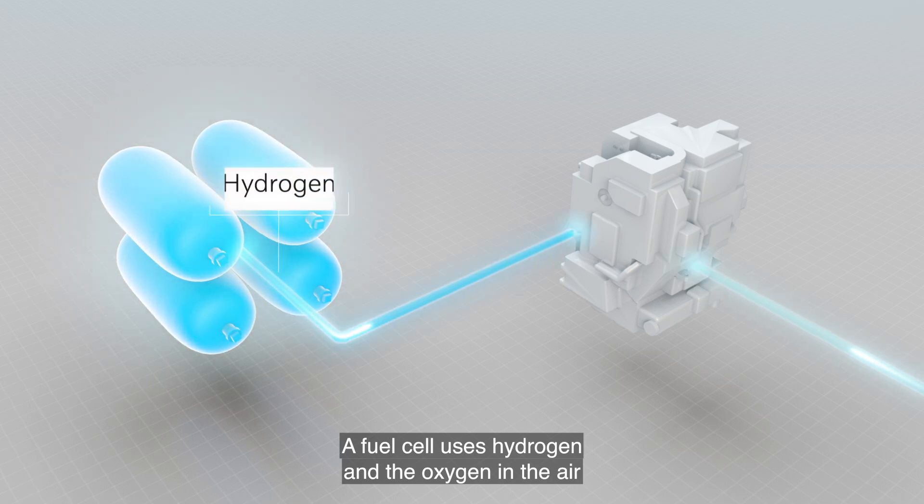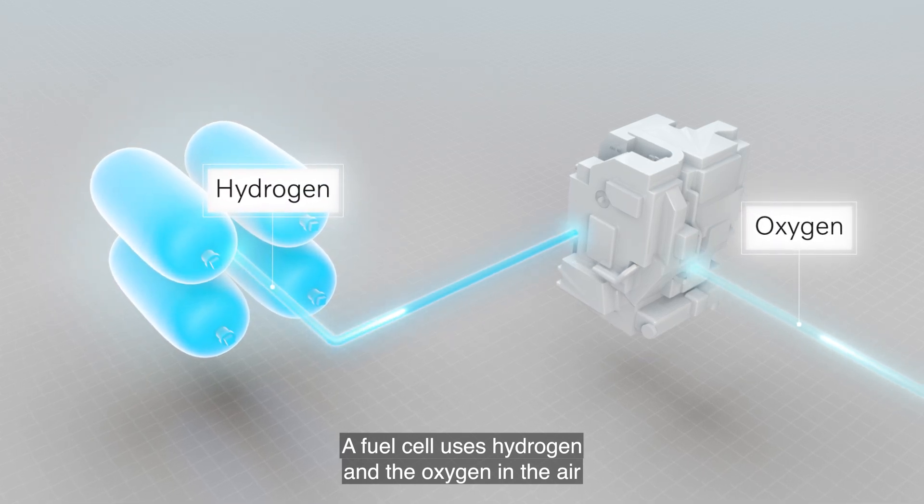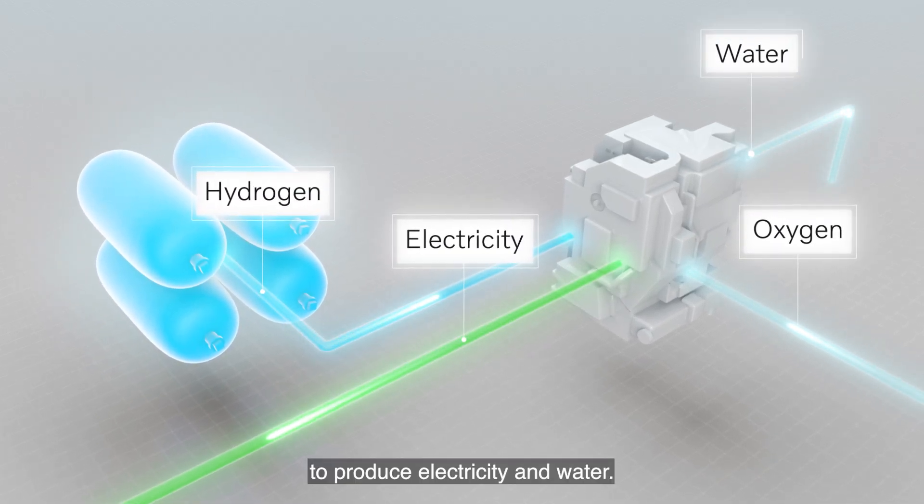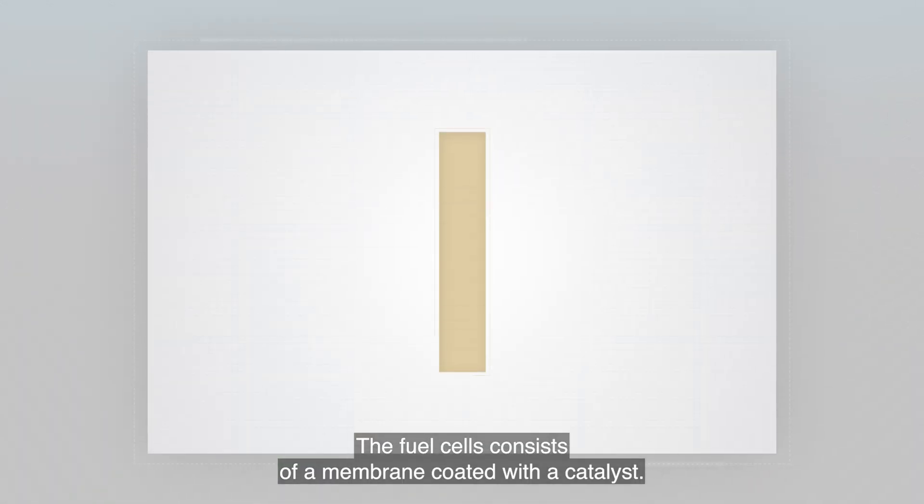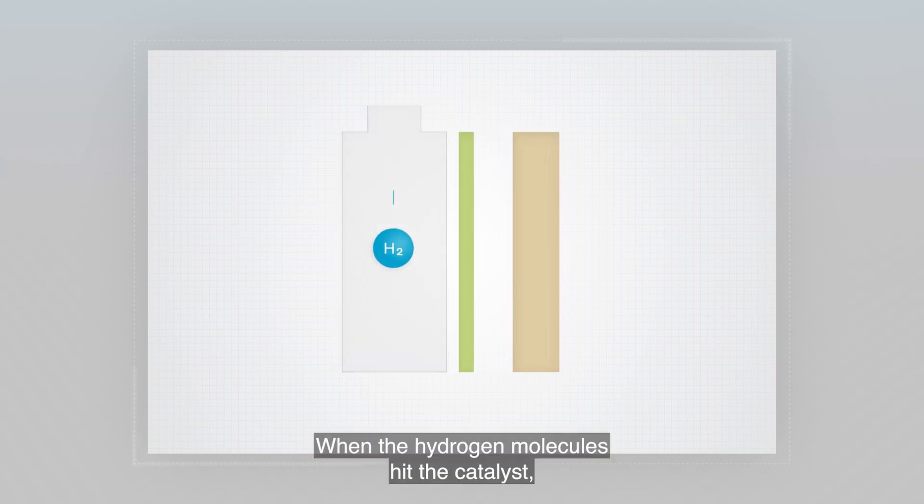A fuel cell uses hydrogen and the oxygen in the air to produce electricity and water. The fuel cells consist of a membrane coated with a catalyst. When the hydrogen molecules hit the catalyst, they are split into hydrogen ions and electrons.